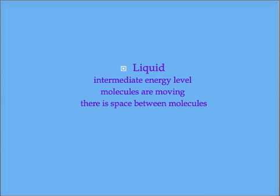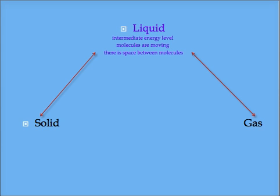Let's start with the liquid state. When a substance is in liquid form, it is at an intermediate energy level. There is space between molecules and the molecules are moving about.